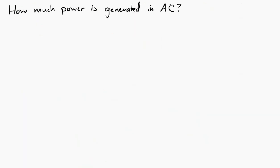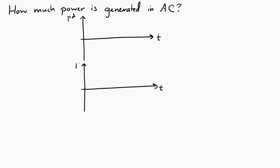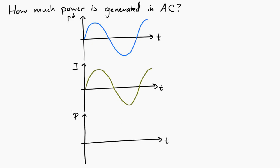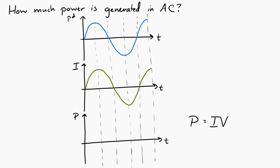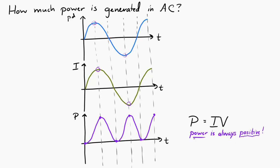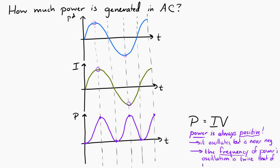Now let's think about the power generated by an AC generator. Power equals I times V, so if we multiply the values of the potential difference and current graphs together we get the power graph. We're always either multiplying a positive times a positive or a negative times a negative, so the power will never be negative. The power oscillates but it's always positive. Also note something interesting: the power oscillates at twice the frequency of the potential difference and the current.